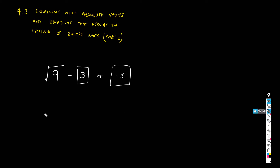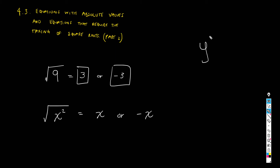When you take the square root of a number that is already raised to the square, the answer is going to be just x or minus x. The square root sort of cancels the square. If you raise a number to the square and then take the square root of that result, you end up with the same number, either positive or negative. You may think of the square root as the opposite operation to squaring.